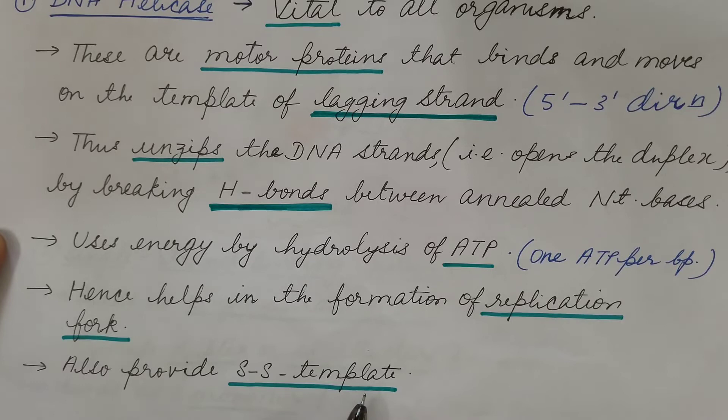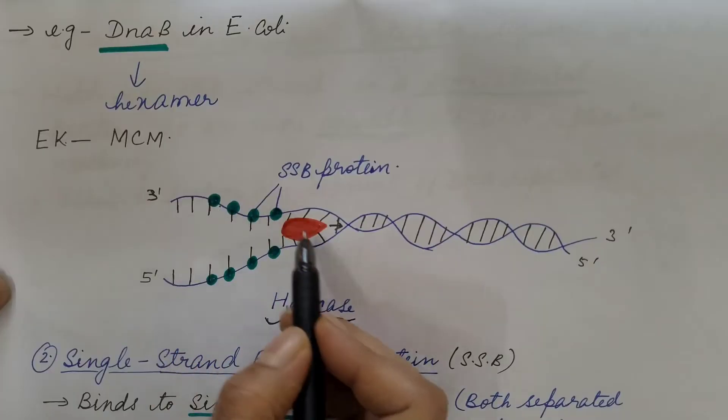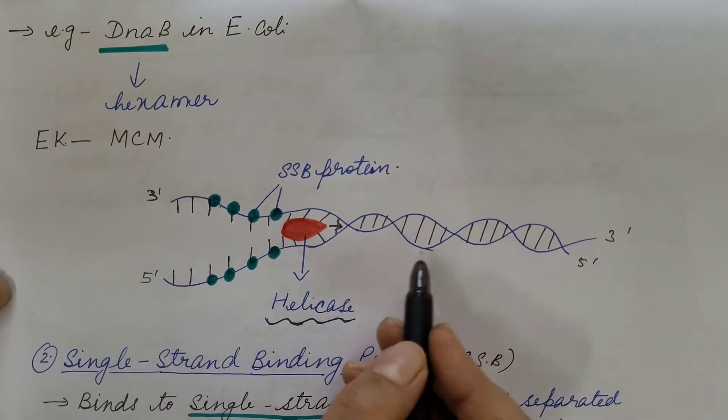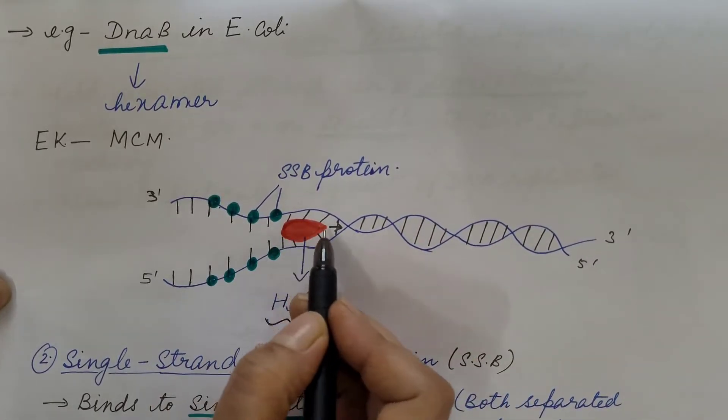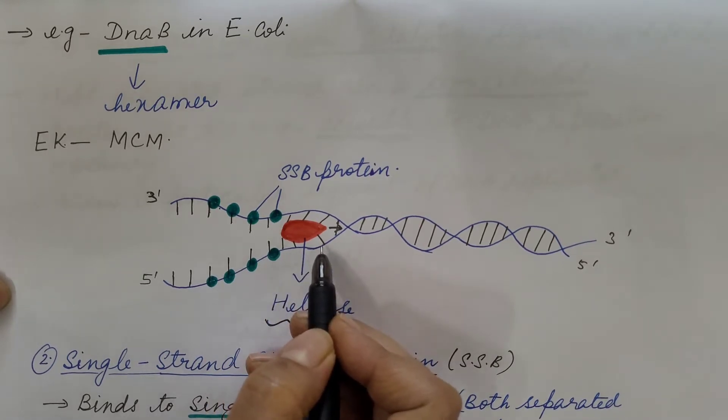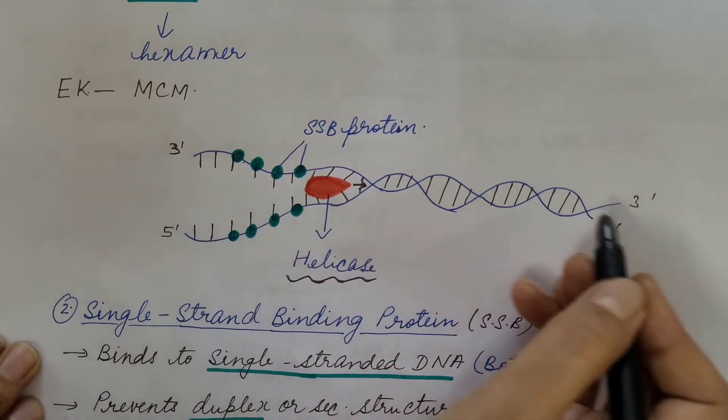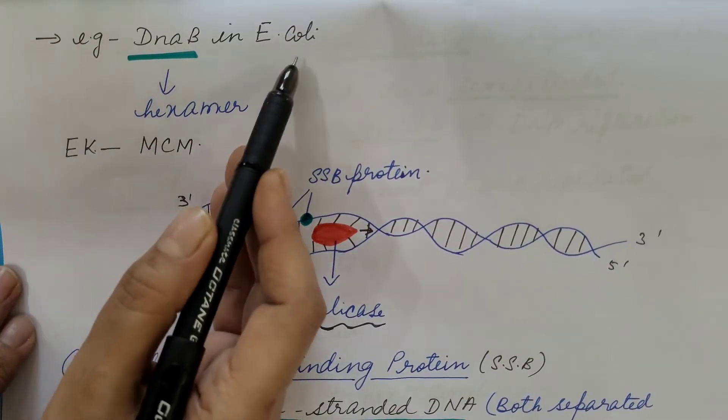It also provides single strand template for the synthesis of the new strand during DNA replication. So this is the double helical structure of the DNA. The helicase comes and binds to the template of the lagging strand, so it binds to this strand and moves in this direction, that is 5' to 3'. Example of helicase in E. coli is DNA B, which is a hexamer, and in eukaryotes it is MCM.